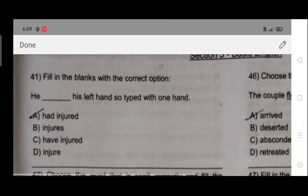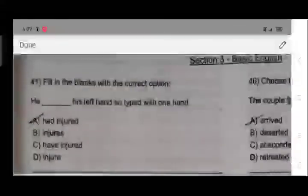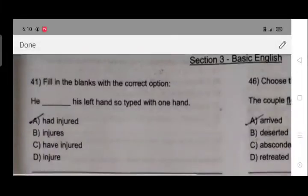And B part injures is used in present tense and D part injure is used in plural, so the appropriate answer will be had injured. He had injured his left hand, so typed with one hand.